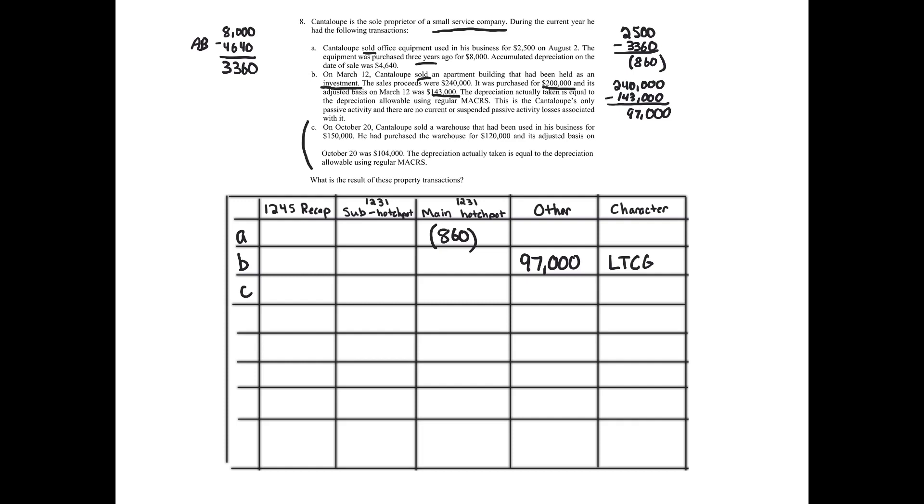Let's go on to C. On October 20th, Cantaloupe sold a warehouse. We got real property that had been used in business for $150,000. He purchased it for $120,000. Adjusted basis is $104,000. So we have a realized gain of $46,000. It was a sale. Guess what? It's going to be recognized. Just like that, move right to step three.